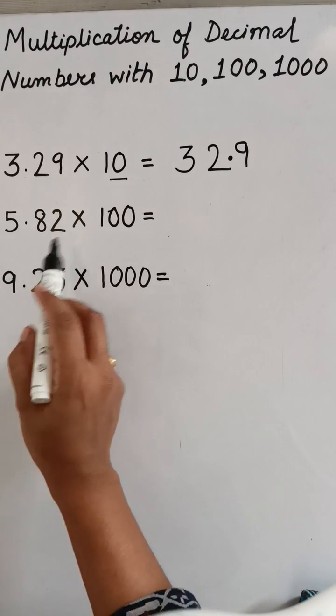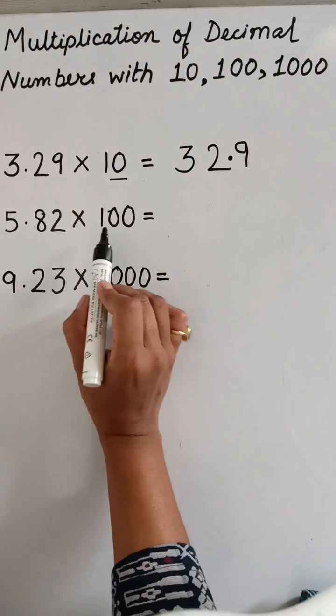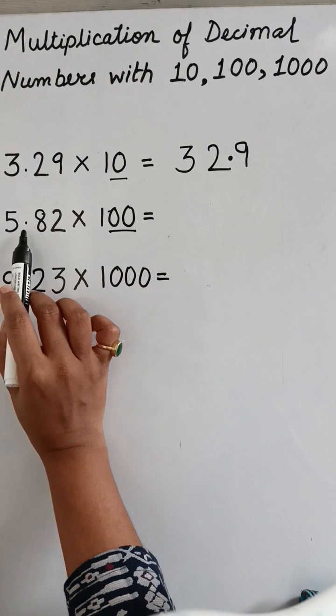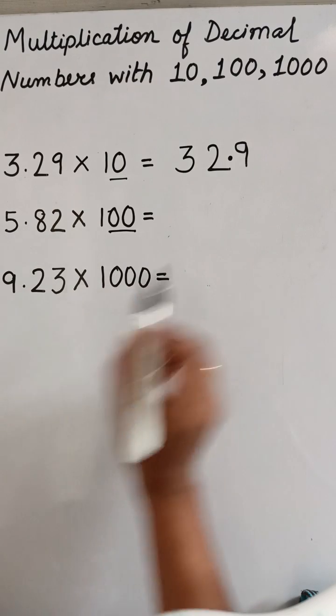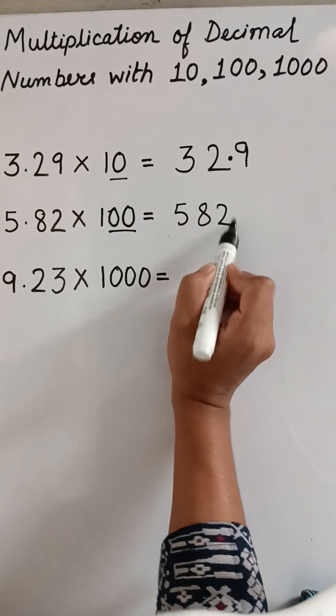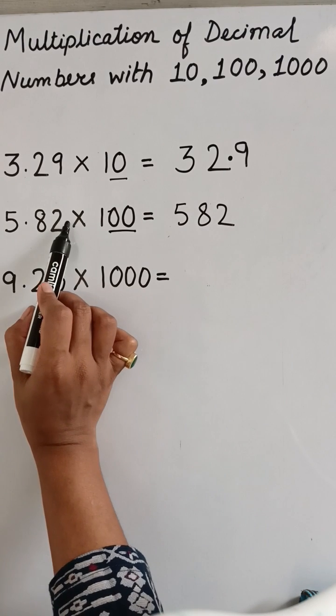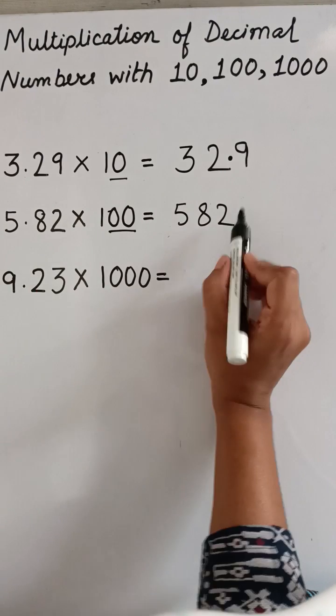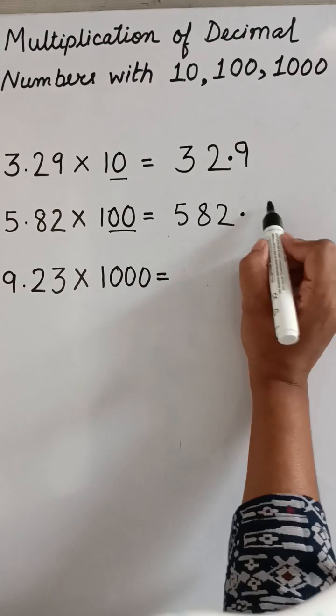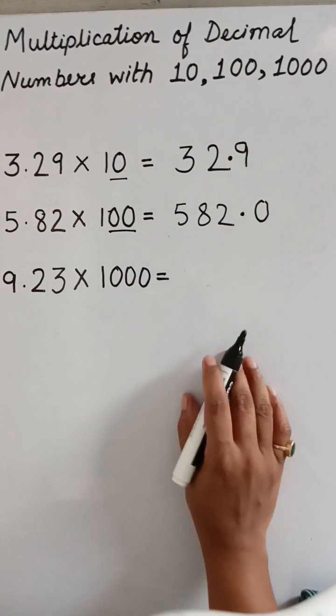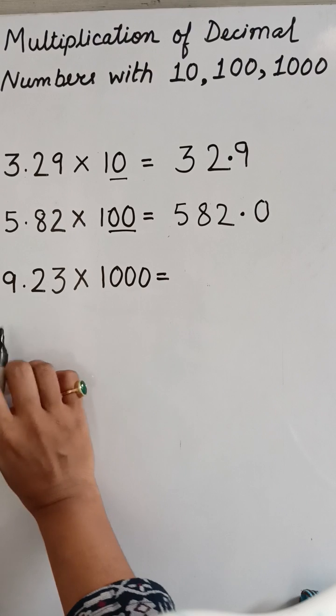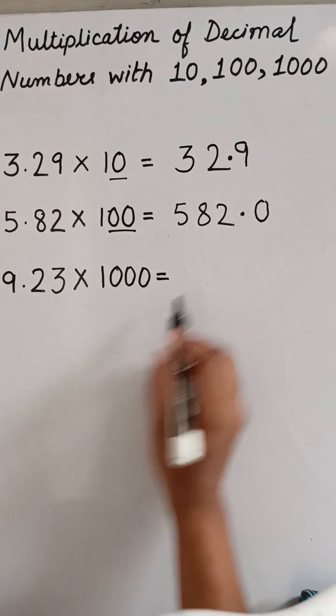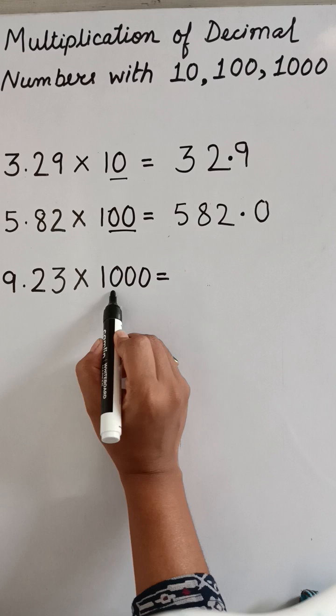Now the second sum: 5.82 × 100 means two zeros, means the decimal point will shift two places. The answer will be 582. Now from here, it will shift after two digits, means here, and we have to add a zero after the decimal point.